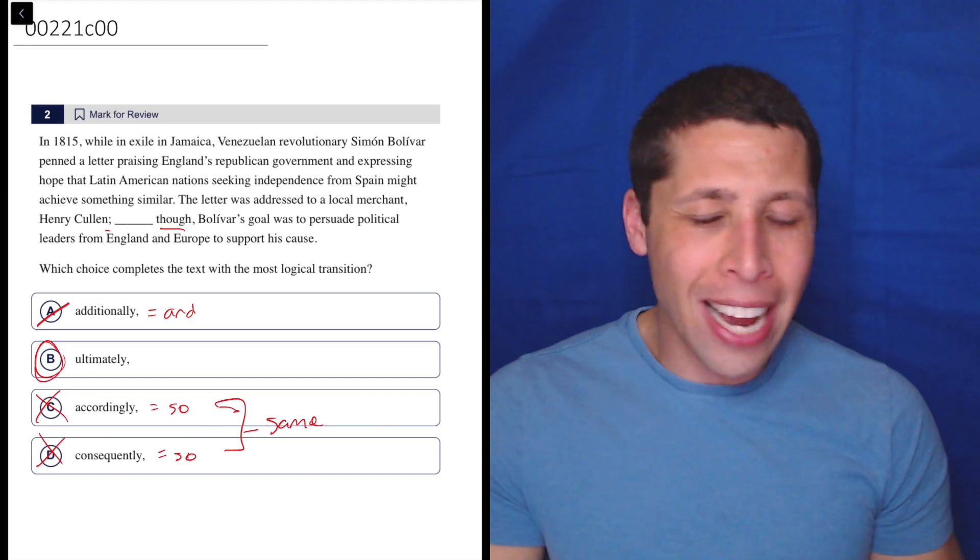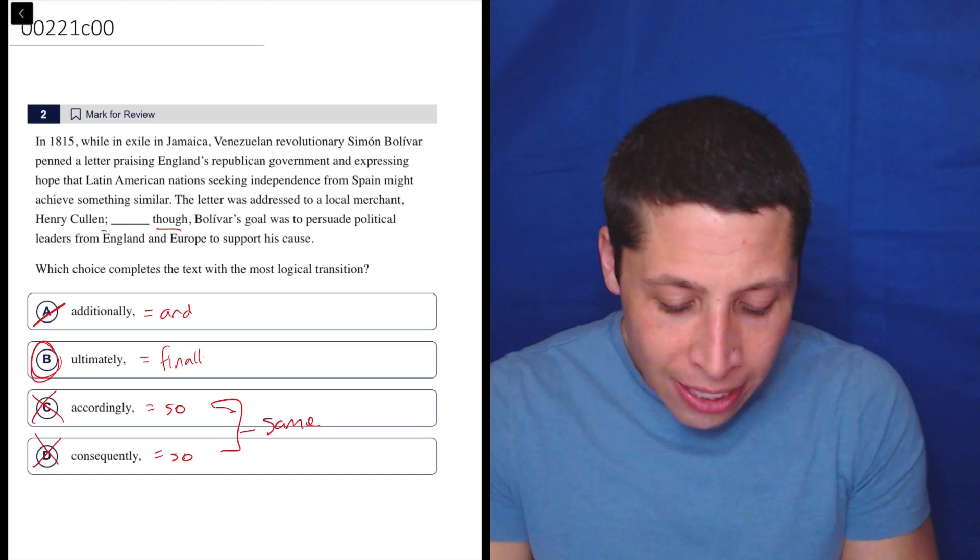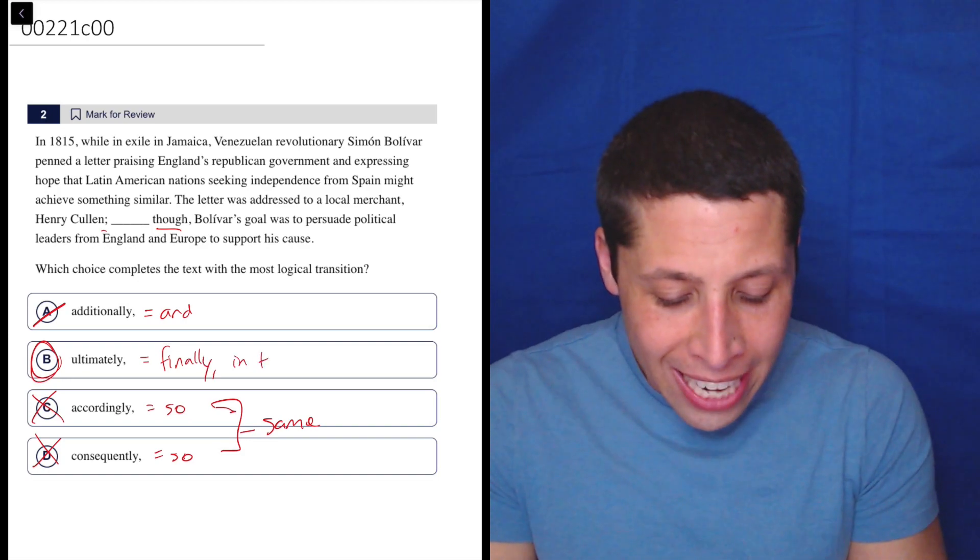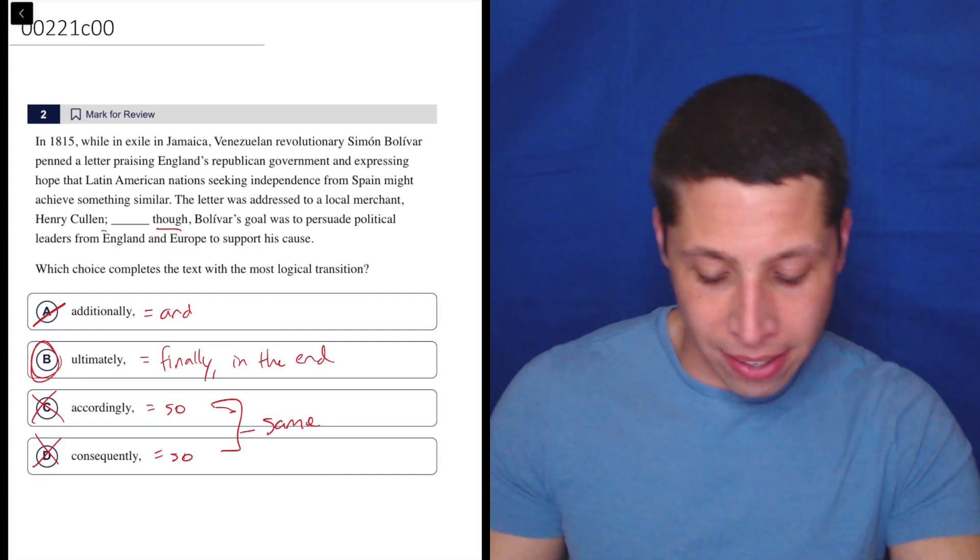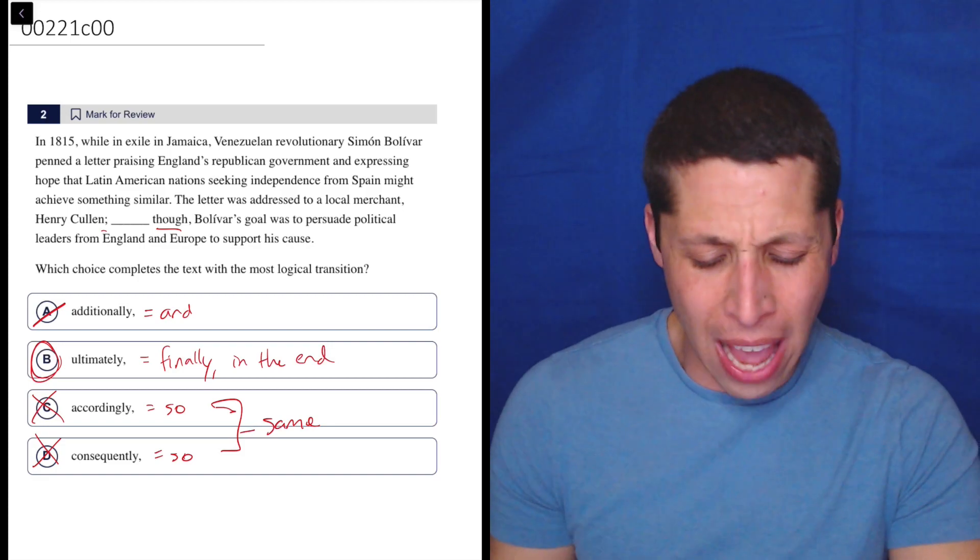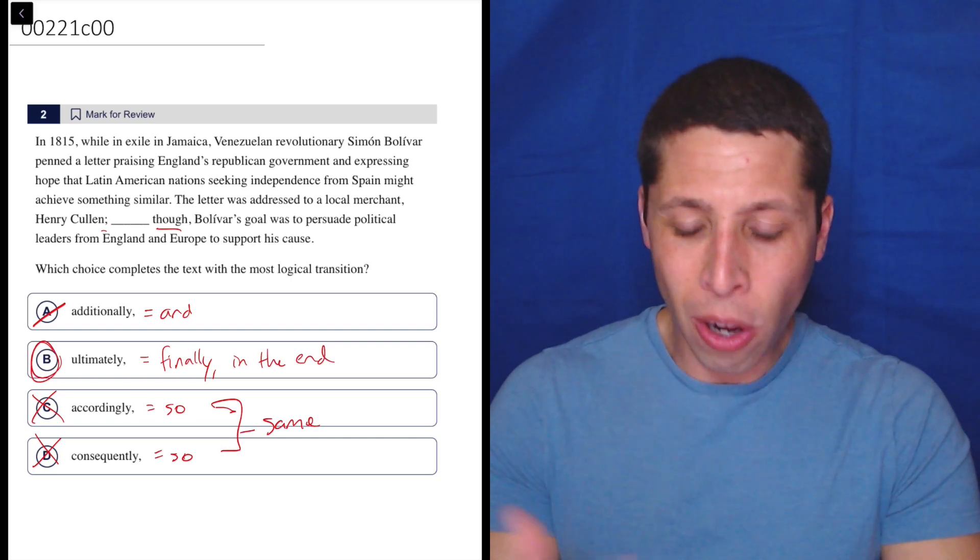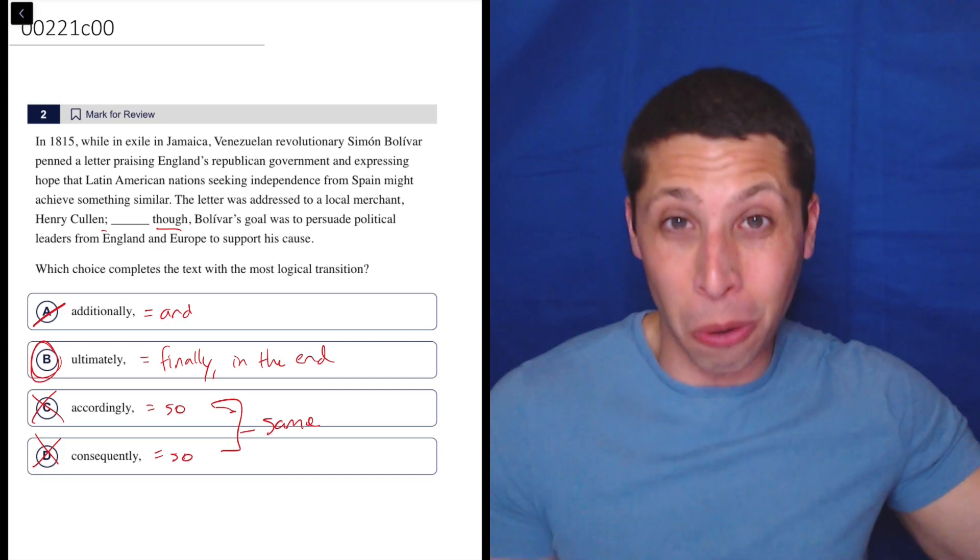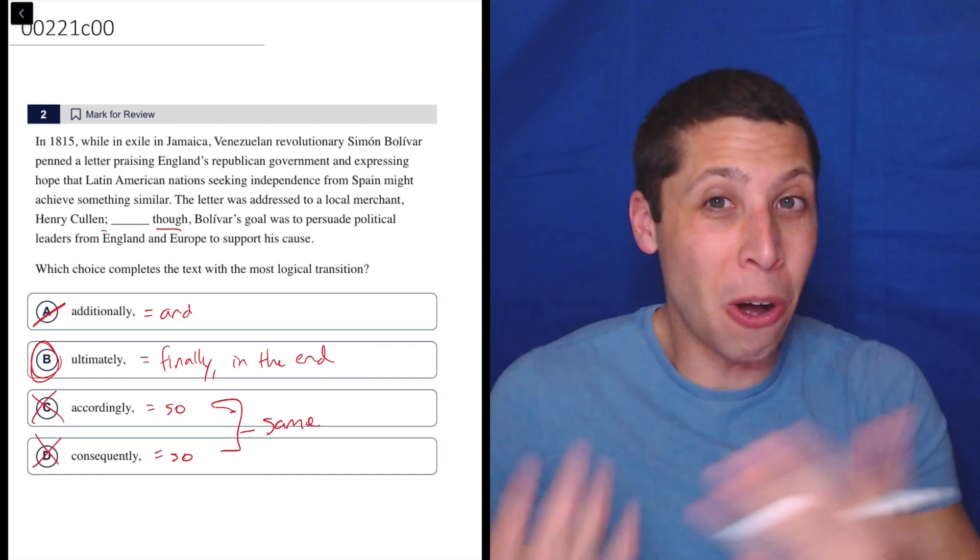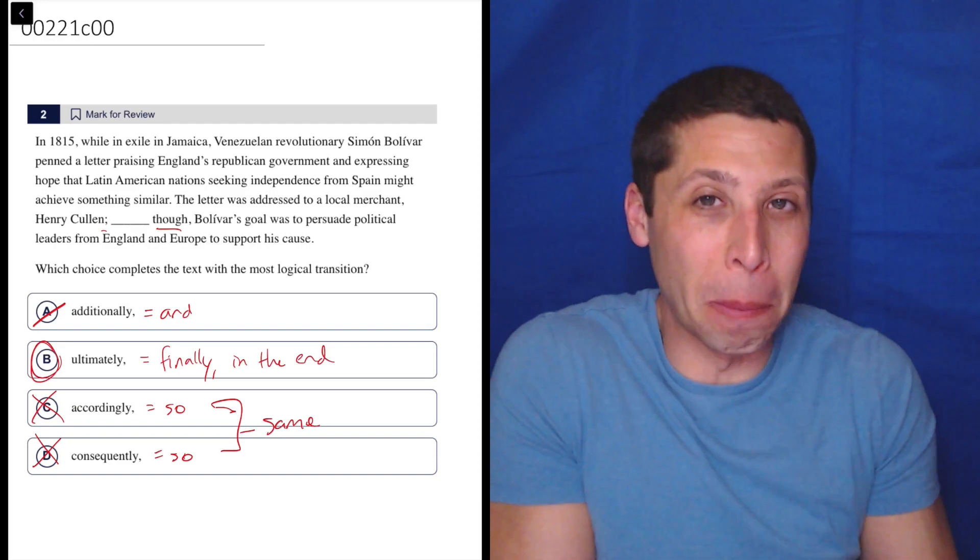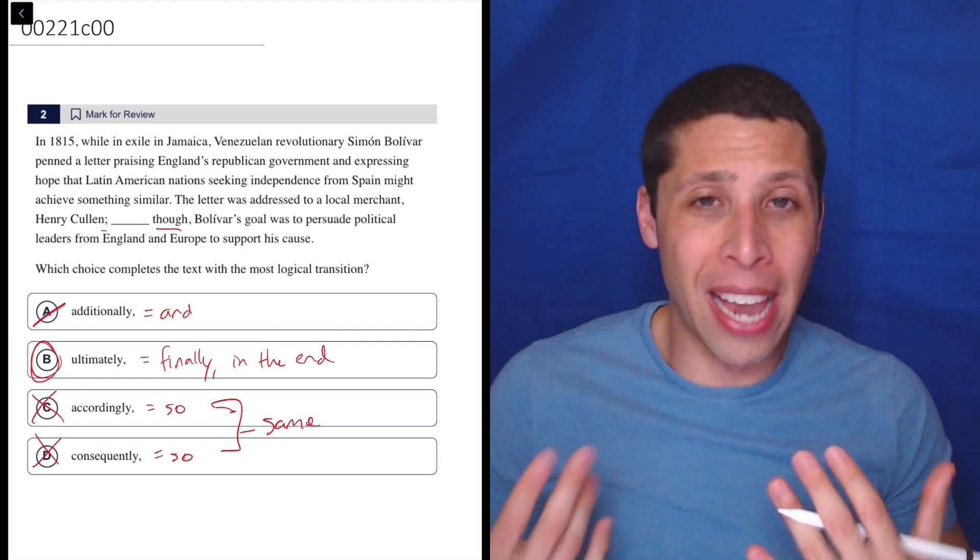And ultimately, I guess, is doing that. It kind of means something like finally or in the end. It's hard to really summarize. It's such a weird transition word. But basically, I guess what they're saying is he's addressing it to this merchant. Ultimately, though, like his real goal is to talk to the king. So ultimately, finally, in the end, that's his main purpose. I don't know why he's addressing it to a local merchant. Like this story doesn't make any sense to me. But that's okay, because I still get the right answer.